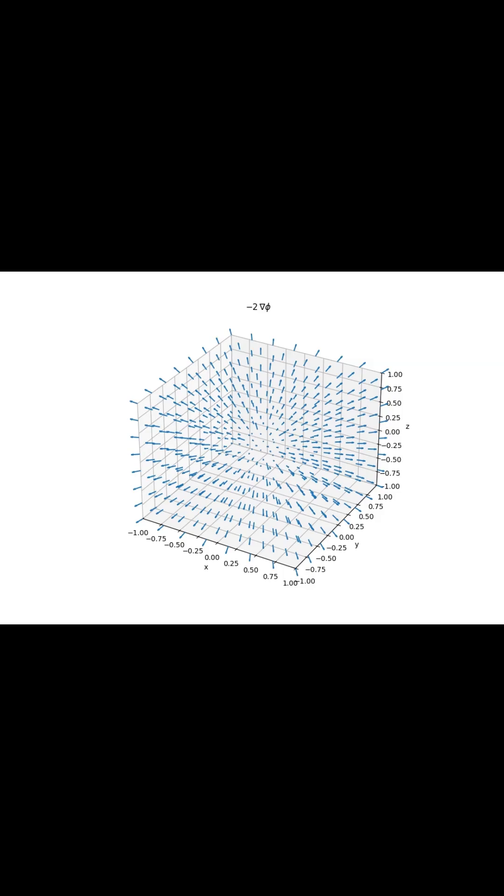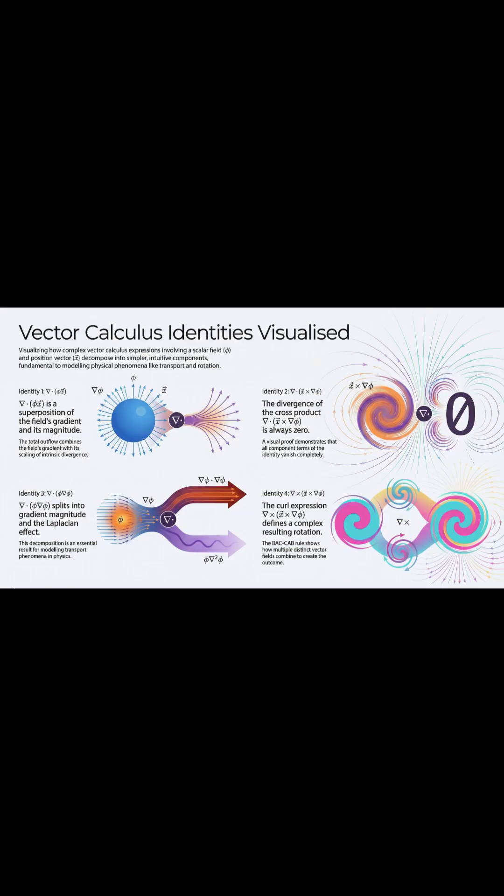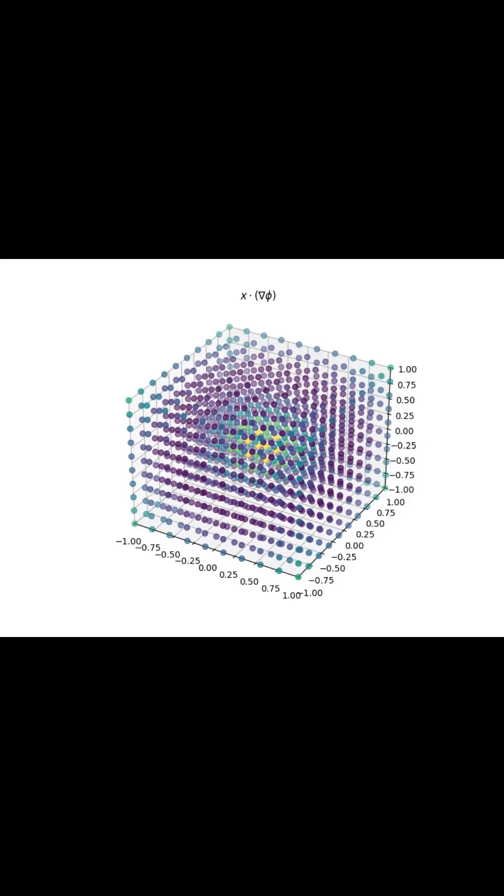We've found three essential insights that come from breaking down these complex identities. First up, decomposition. Looking at the divergence product rule, we see that the total outflow is really an additive superposition. It's made up of two parts: the position vector's own intrinsic divergence, which is scaled by the scalar field, plus this additional effect that's driven by the field's gradient.